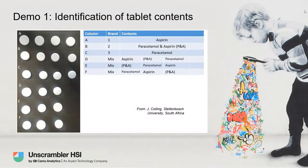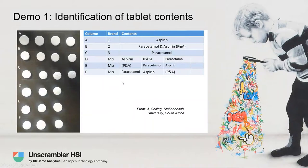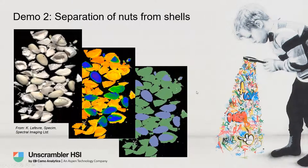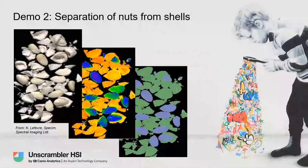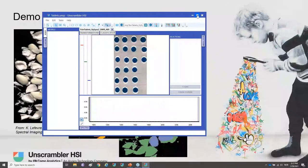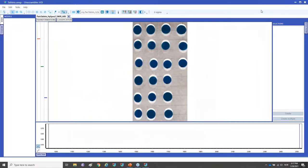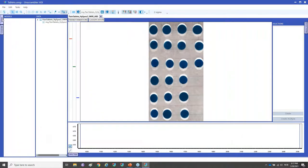Rather than going through more slides, I want to show a demo. I'll use a tablet example that is also included in the help documentation and tutorial of the software, so you can follow along afterwards. After that, I'll show an example of how to use the software to detect and separate shells from nuts or almonds. Here is the interface — the way the software looks after you have imported an image into the workspace. What we see here are the tablets.